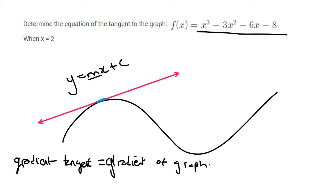So our goal is to find the gradient of this graph at that point. We know that in calculus, to find the gradient you use the first derivative. So we're going to take the first derivative of this, which is 3x² minus 6x minus 6.